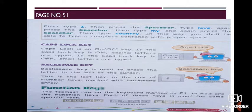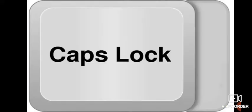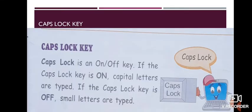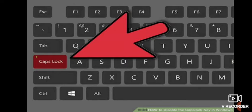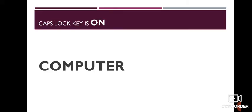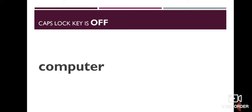Next, on page number 51, Caps Lock Key. Caps Lock Key is an On-Off Key. If the Caps Lock Key is On, capital letters are typed. And if the Caps Lock Key is Off, small letters are typed. The key in red color is the Caps Lock Key. When it is On, capital letters are typed, and when it is Off, small letters are typed.